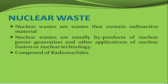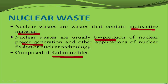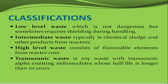Nuclear waste is a byproduct of nuclear power generation. Nuclear power plants contain radionuclides. For classification, there are four categories: low level waste, intermediate waste, high level waste, and transuranic waste.